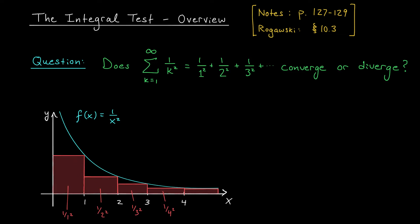The question is: does that sum converge, or does it grow without bound and diverge? To answer this, I'll make the following observation. These red rectangles sit underneath the graph of f(x) = 1/x², which means there's more area enclosed between the x-axis and the blue curve than there is underneath the red rectangles. So if the area underneath my blue curve above the x-axis is finite as x goes off to infinity, then the red rectangles must also enclose a finite area, and hence my series will converge.